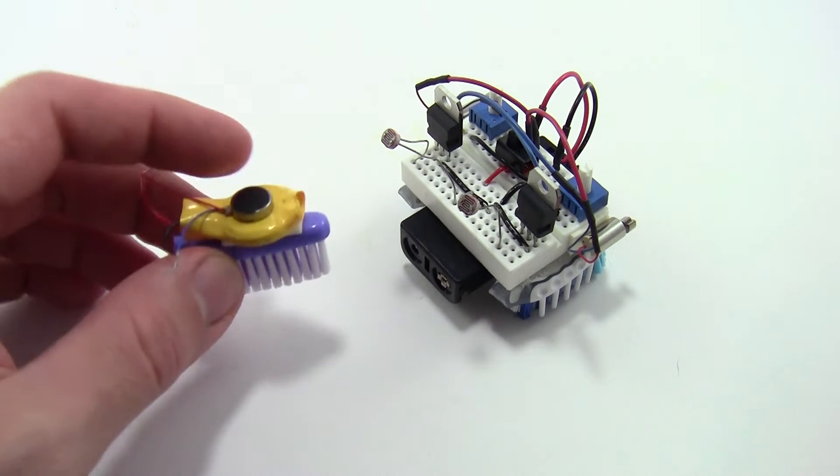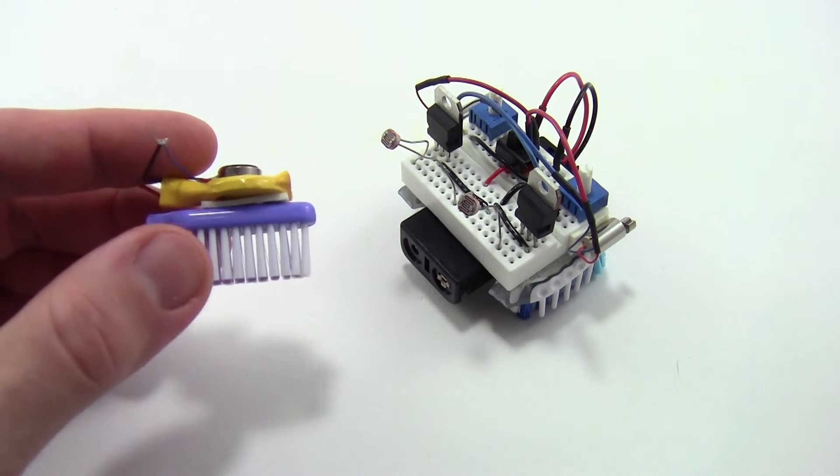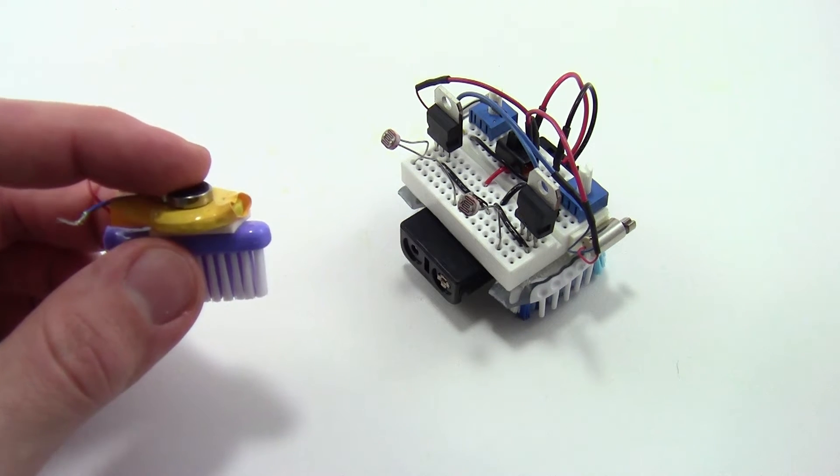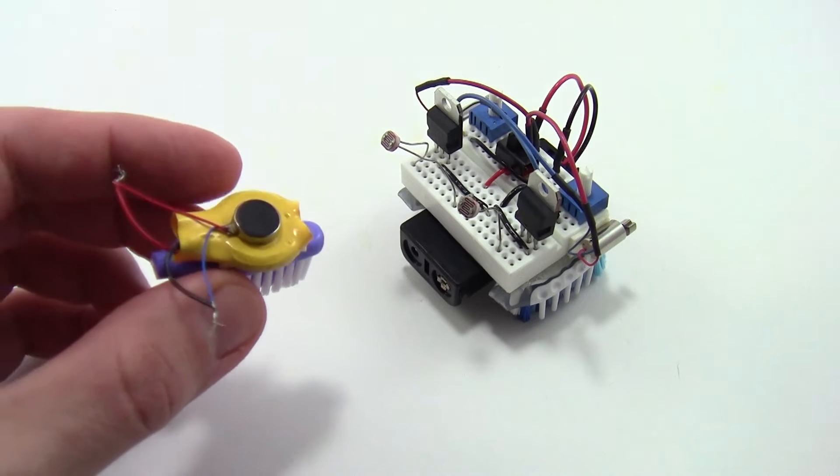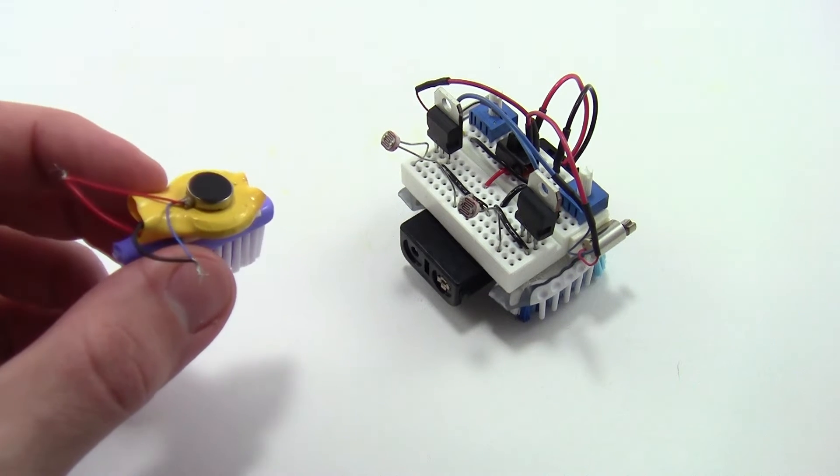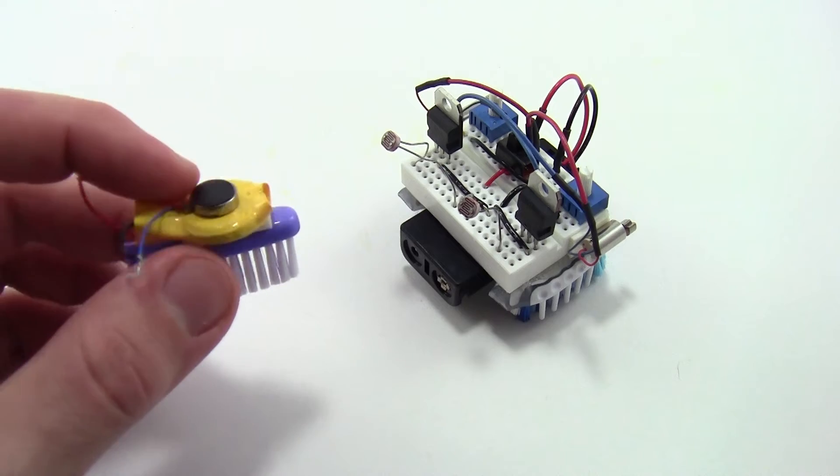You may have heard of regular bristlebots, which are fun robots students can build on the head of a toothbrush using a vibrating motor and a coin cell battery. They're a lot of fun, but their movement is completely random, and there's no real intelligence or steering to their behavior.